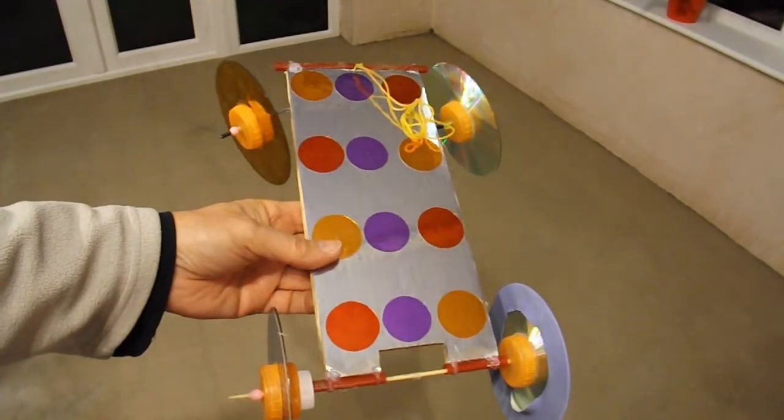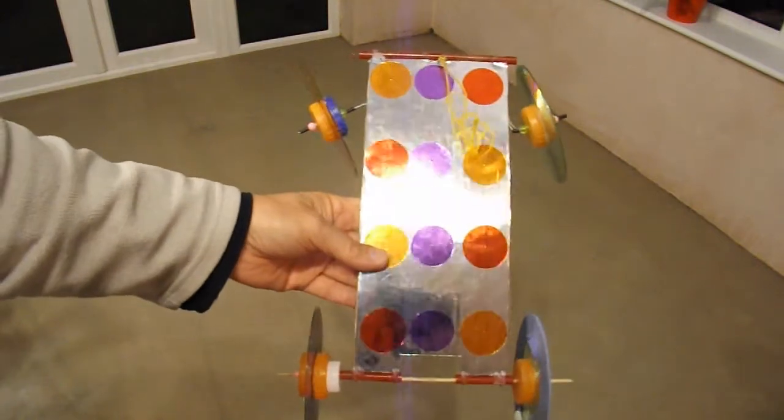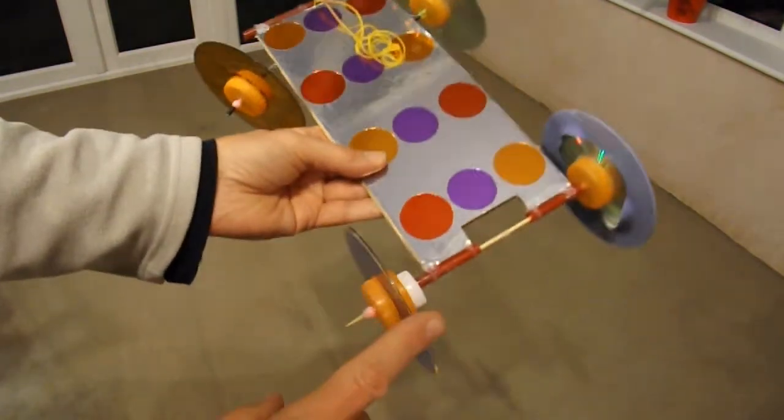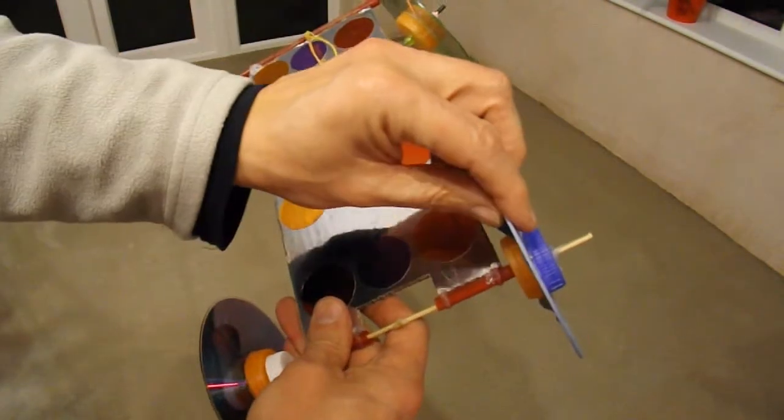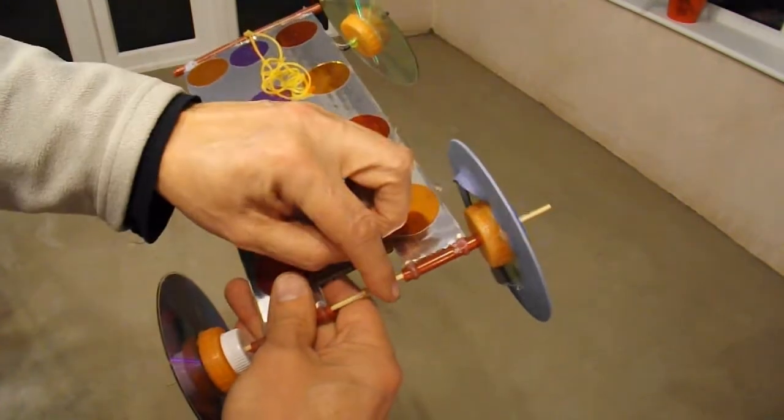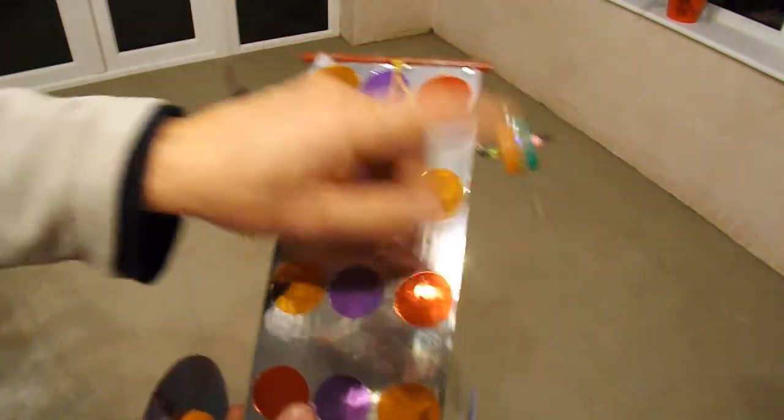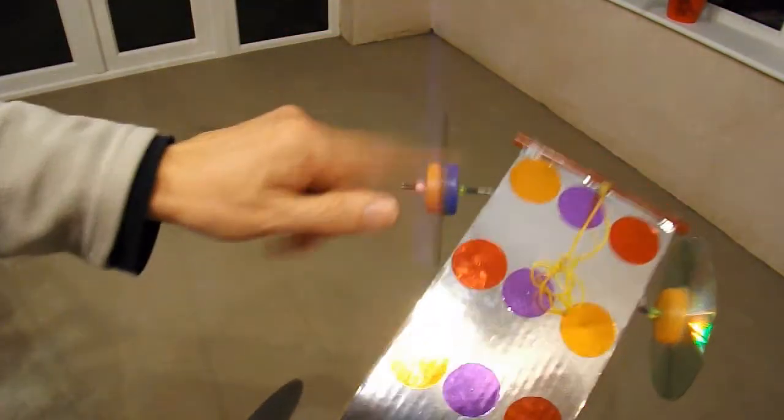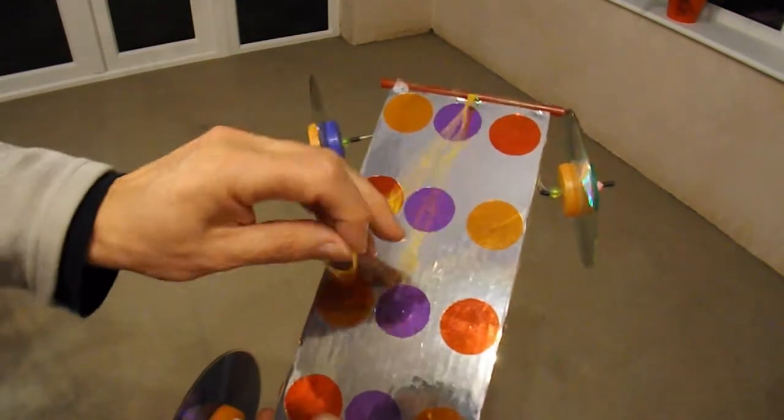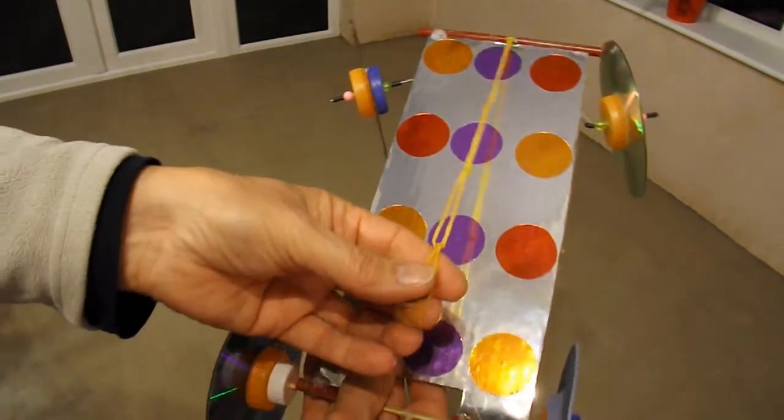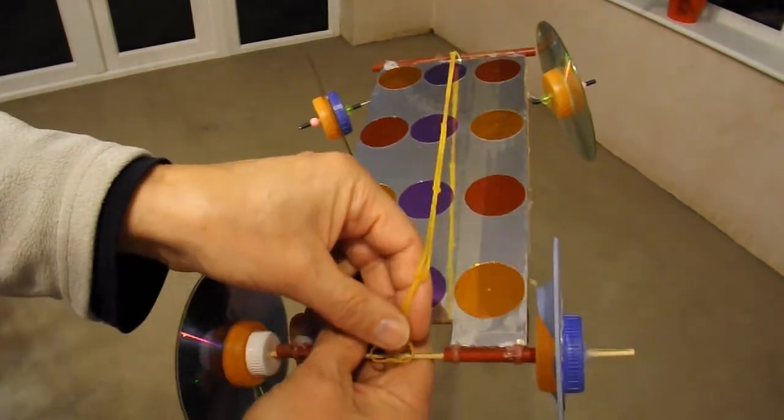There we are all put together. We're in my conservatory to give it a test run. So this wheel is fixed onto the axle, this wheel freewheels, and the front wheels turn. I've got a very lightweight rubber band motor because I don't want too much power.